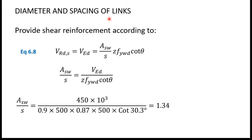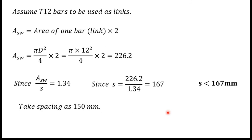Now find the diameter and spacing of links. Using the equation VRds = VEd = (Asw/S)·z·fywk·cot θ, we solve for Asw/S. With z = 0.9 × 500 = 450 mm, fywk = 0.87 × 500 = 435 MPa, and θ = 30.3°, substituting and simplifying gives Asw/S = 1.34 mm²/mm.